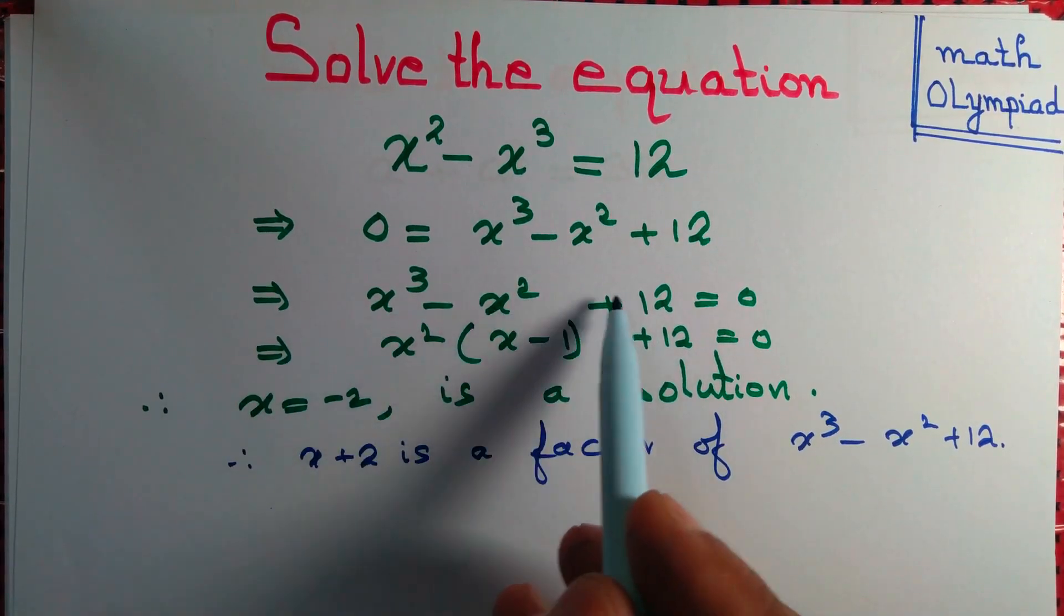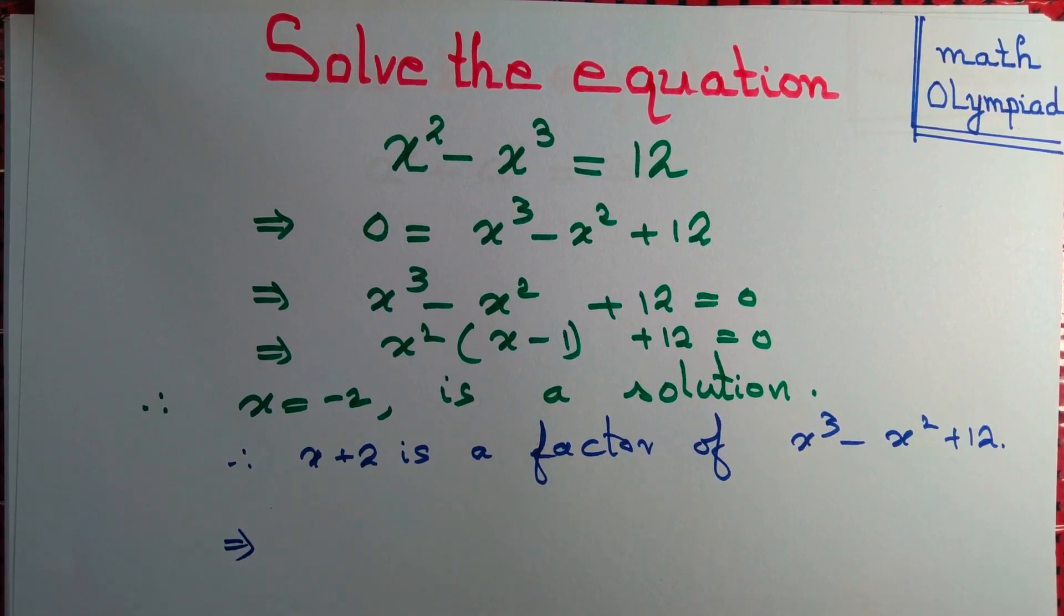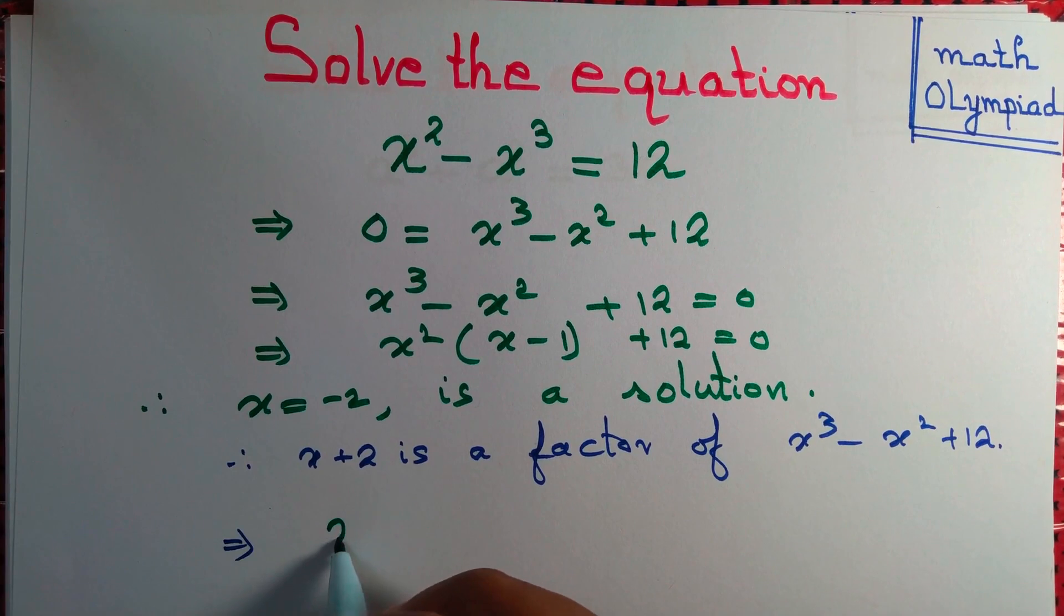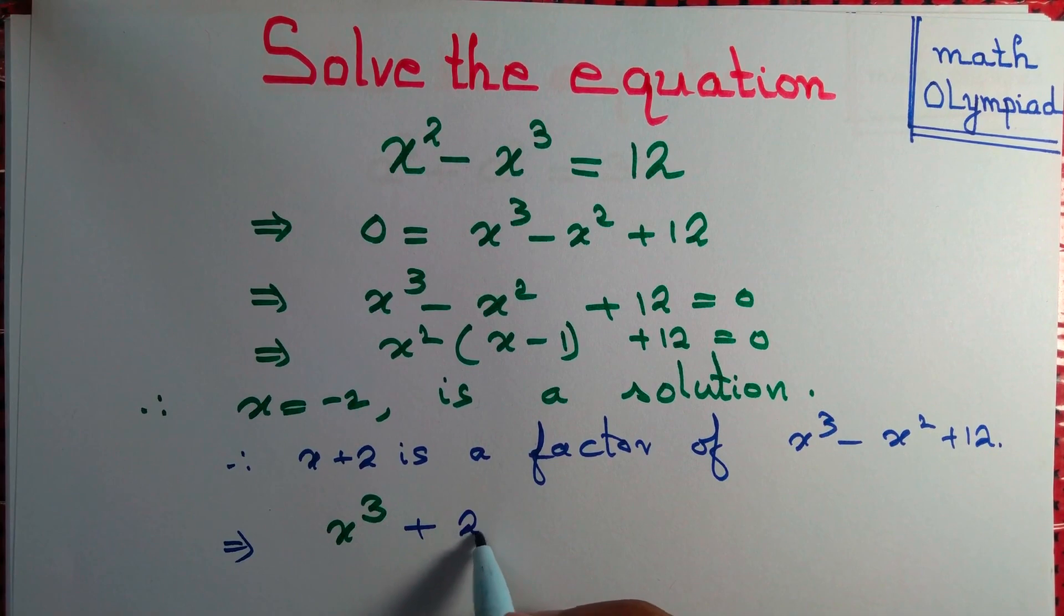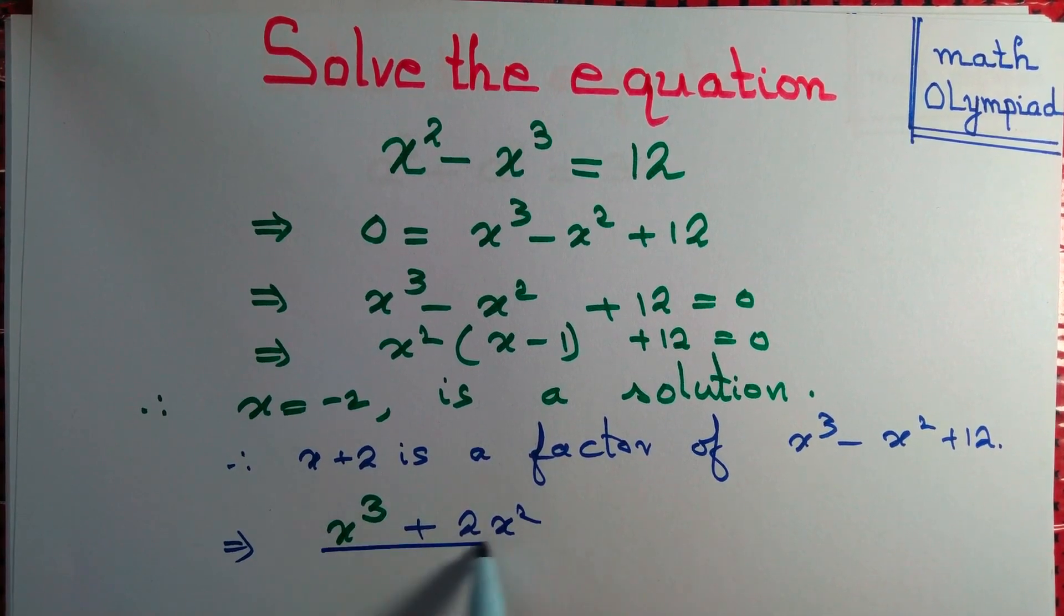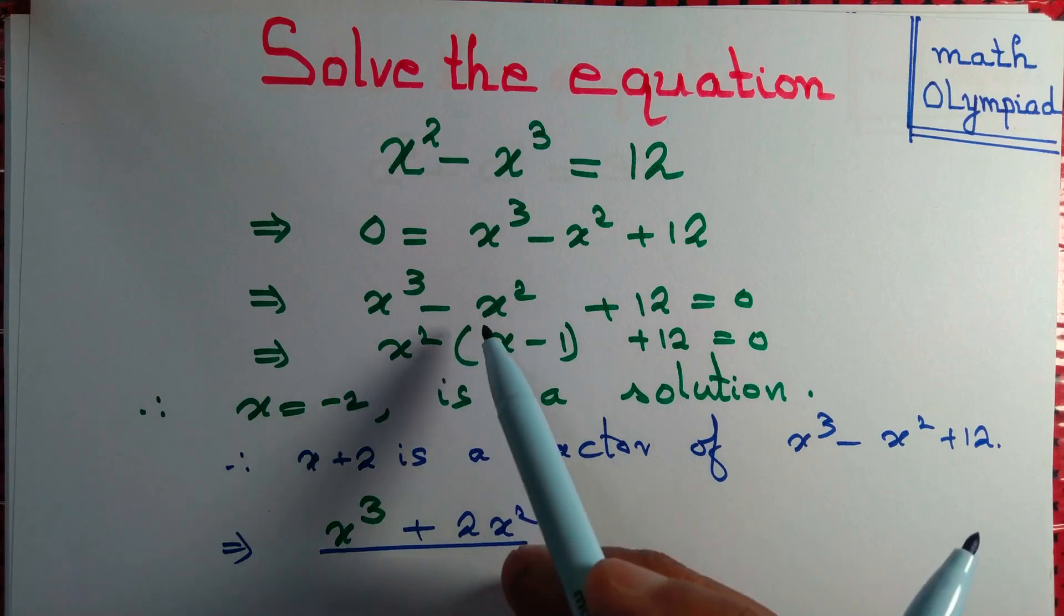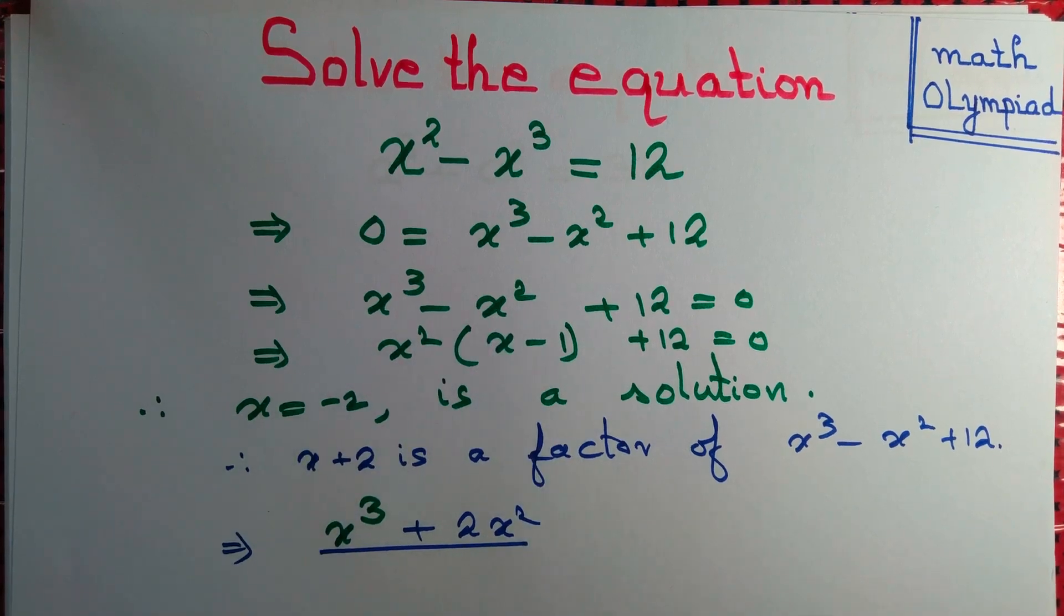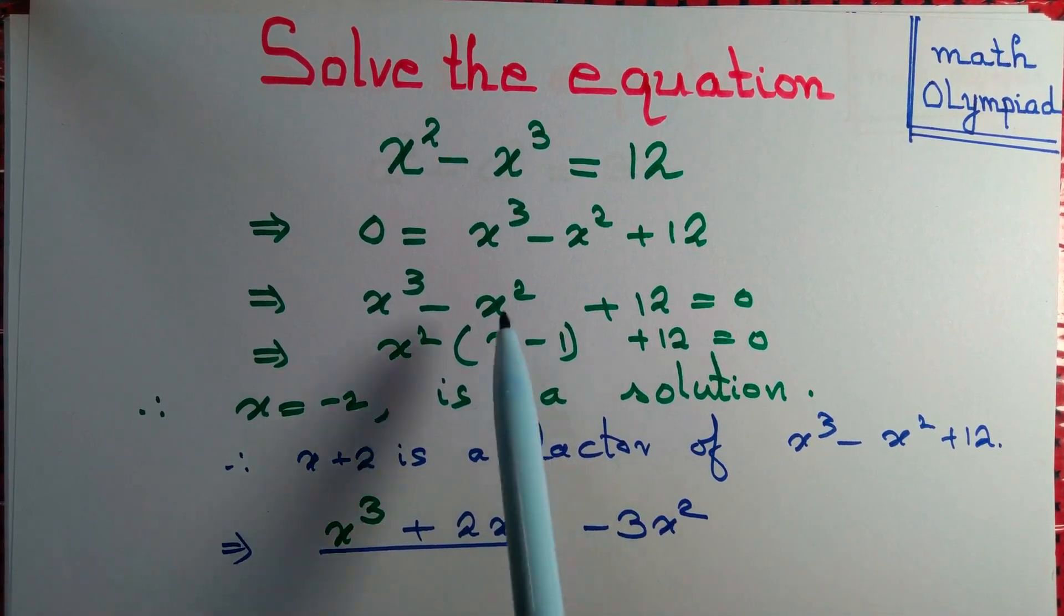So we write x cube minus x square plus 12. We know that x plus 2 is a factor, so let's add plus 2x square. So from here we'll get x plus 2 as a factor. But we have minus x square, so we need to adjust it. So plus 2 minus 3 x square. We'll get it minus x square.